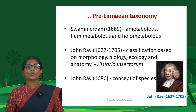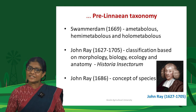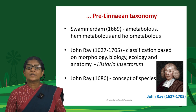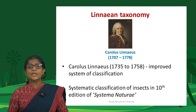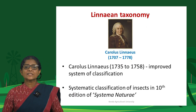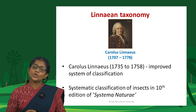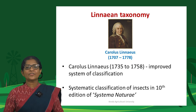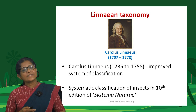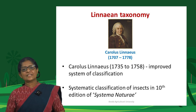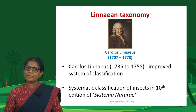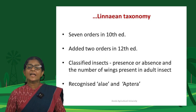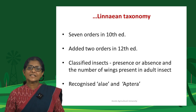John Ray first proposed the concept of species in 1686, which later became the foundation for Linnaean or binomial nomenclature. The Linnaean era started with Carolus Linnaeus, who made gradual improvements in insect classification from 1735 to 1758. In his 10th edition of Systema Naturae, Linnaeus proposed a systematic classification of insects listing 7 insect orders.